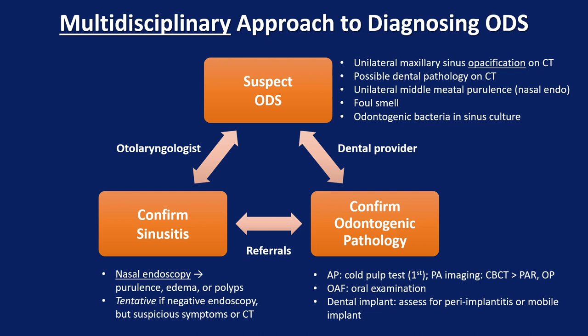There are situations where patients will have a negative endoscopy or cannot undergo nasal endoscopy. If those patients have suspicious symptoms or CT findings, they could get a tentative confirmation of sinusitis. For confirmation of dental pathology, if there's concern for endodontic disease or apical periodontitis, consensus was reached that cold pulp testing is the optimal primary diagnostic modality to assess for pulp vitality, followed by periapical imaging. Cone beam CT scan has been shown superior to periapical x-rays or orthopantograms for detecting periapical lesions, though both are acceptable primary imaging modalities when cone beam CT is not available.